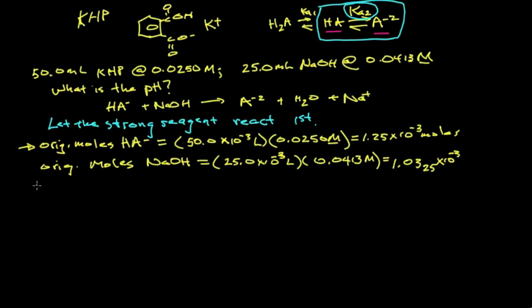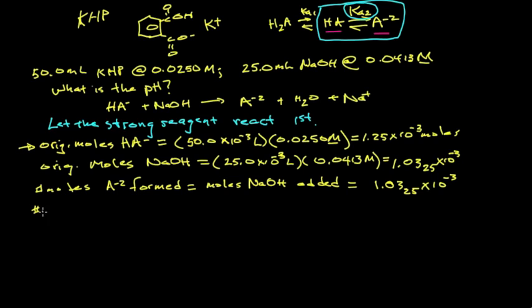Let's calculate the number of moles of the anion that's formed. That'll be the same as the number of moles of sodium hydroxide added, 1.0325 times 10 to the minus 3. The number of moles of HA that's left is 1.25 times 10 to the minus 3 minus the amount that reacts with sodium hydroxide. That gives us 2.175 times 10 to the minus 4 moles.